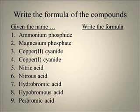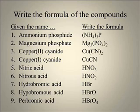Let's try a few more. I'm going to give you these nine names and see if you can write formulas of these nine compounds. In the case of the copper cyanides, you had to determine the charge of the copper ions. Some people mistakenly think that copper Roman number 2 means there are two coppers — that's not correct. It means the copper is plus two.